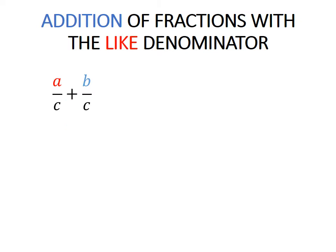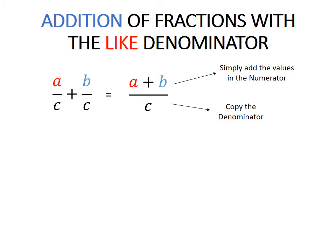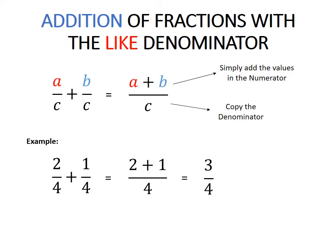Addition of fractions with like denominators. You have A over C plus B over C. You can see that the denominators are both C. So what we are going to do is simply add the values in the numerator — we have A plus B — and copy the denominator since they have the same denominator. Example: 2 over 4 plus 1 over 4 equals 2 plus 1 over 4. The answer would be 3 over 4.